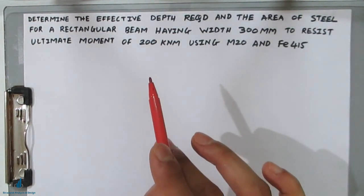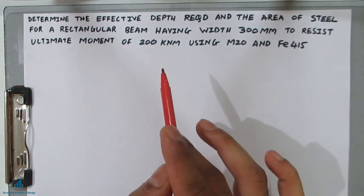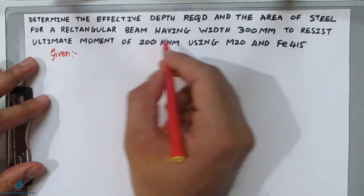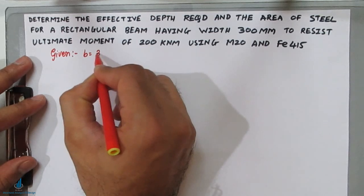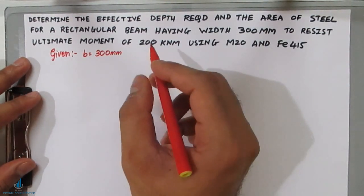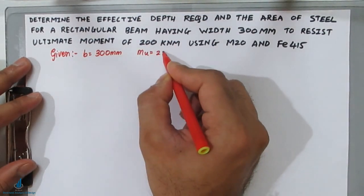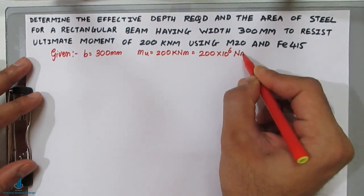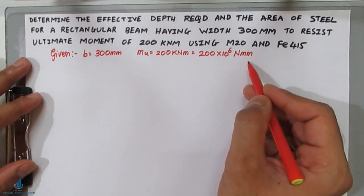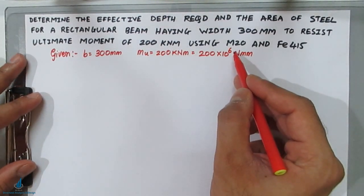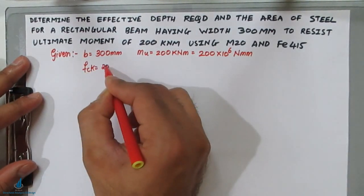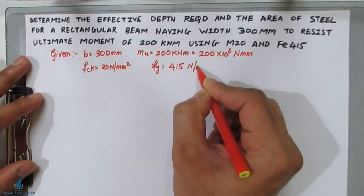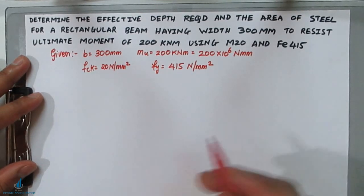The first step in my RCC lectures is to write down the given data. Width b = 300 mm. Ultimate moment Mu = 200 kN·m, which equals 200 × 10⁶ N·mm — we multiply by 10⁶ to convert kN·m to N·mm. fck = 20 N/mm². fy = 415 N/mm².